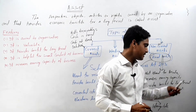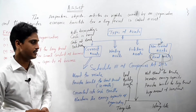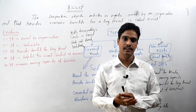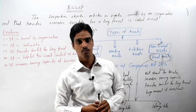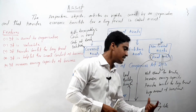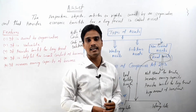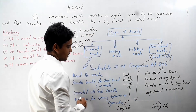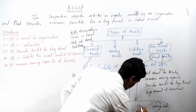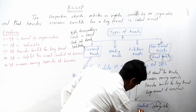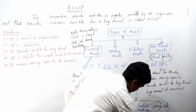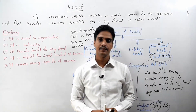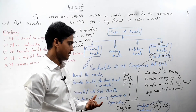Intangible fixed assets are those fixed assets which cannot be seen and touched, but whose existence can be felt by an organization. Examples are goodwill, trademark, copyright, patent, license, etc.